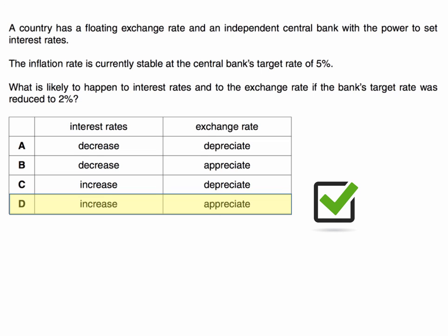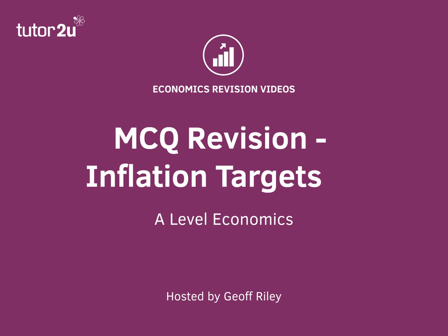So a fall in the inflation target for a country with a floating exchange rate, in the short term at least, is likely to lead to higher interest rates and a stronger, appreciating currency. That's why D is the correct answer to this question.